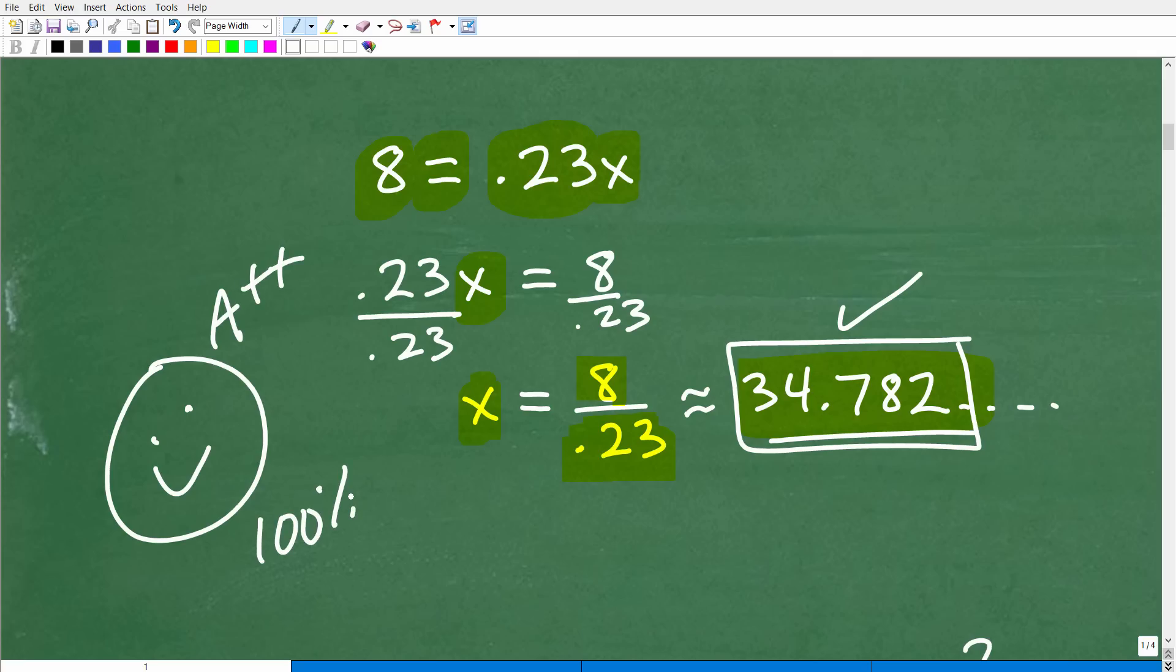Again, if you did it in a completely different way, as long as you're like, no, I know exactly how to solve this type of problem, that's what counts. But let's go ahead and check this answer here, 34.782.